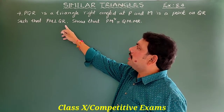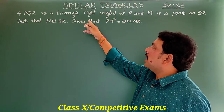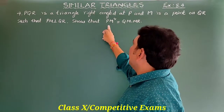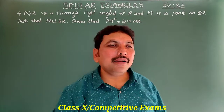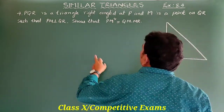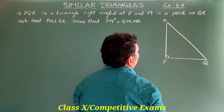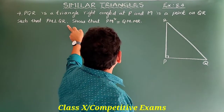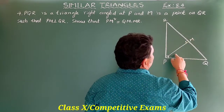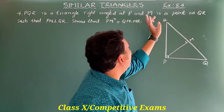Next question: PKR is a triangle right-angled at P, and M is a point on QR such that PM is perpendicular to QR. Show that PM² = QM × MR.